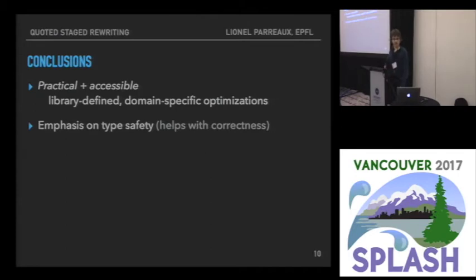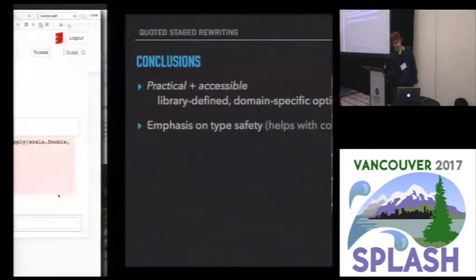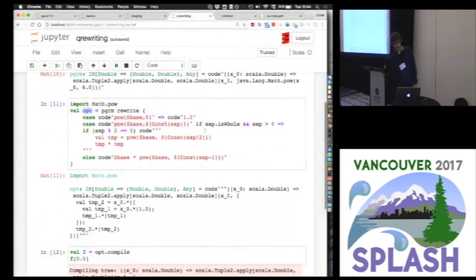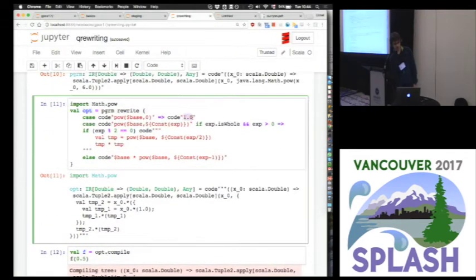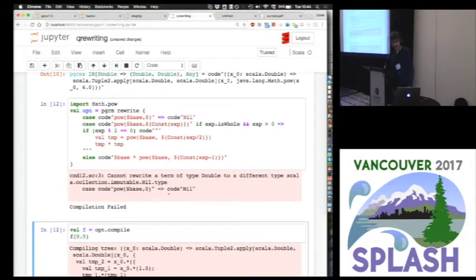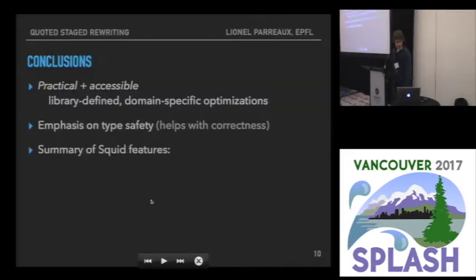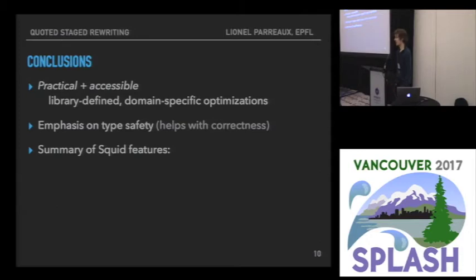Squid puts emphasis on type safety, checking that rewriting is type-preserving. For example, in a rewriting rule, if I had written nil — the empty list in Scala — instead of the correct result, it won't compile: you cannot rewrite a term of type double to nil. This helps with correctness, meaning programmers have fewer crashes when experimenting, which makes for a better user experience.